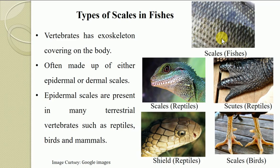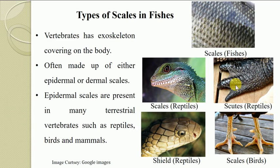In other vertebrates such as reptiles, birds and mammals, the scales originate from the epidermis and hence are epidermal in origin. We can recognize different kinds of scales in terrestrial vertebrates. In reptiles, there are different kinds of scales on different regions of the body. The legs of reptiles are provided with specialized modified scales known as scutes. The shields present on the dorsal side of the head, particularly in snakes, are also epidermal in origin.